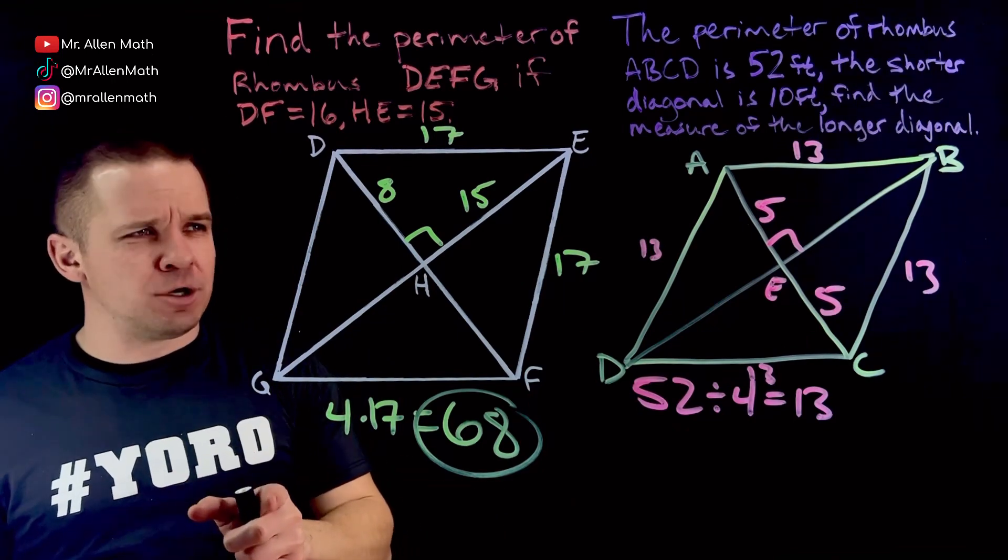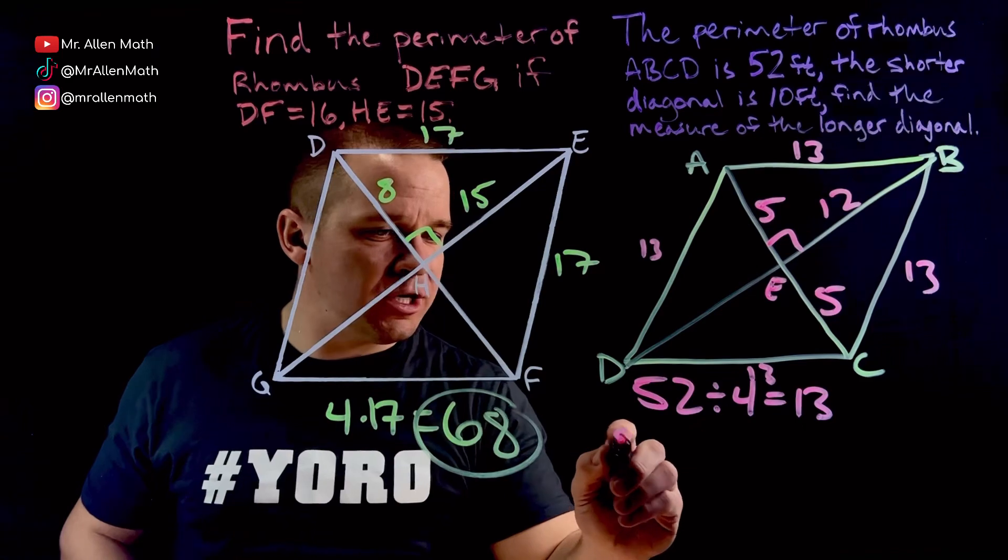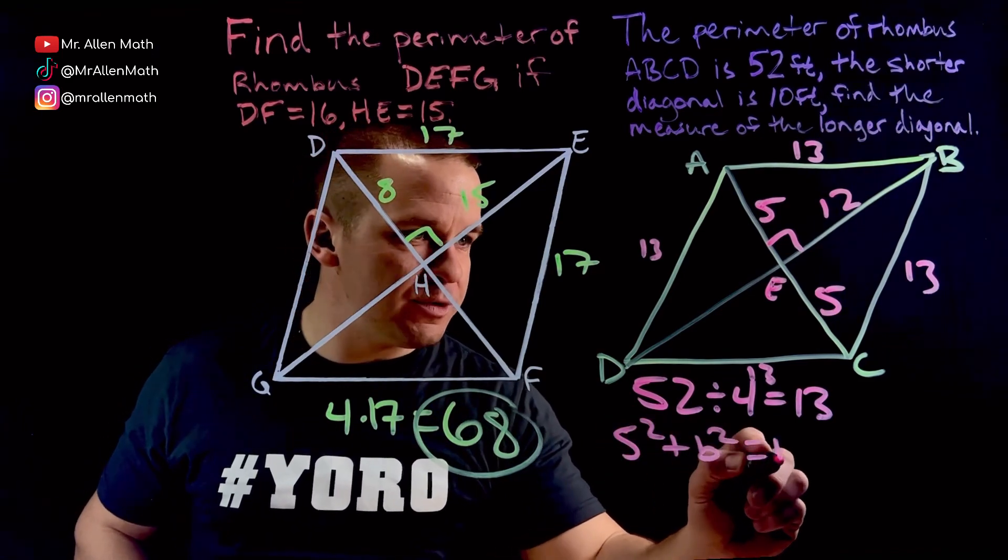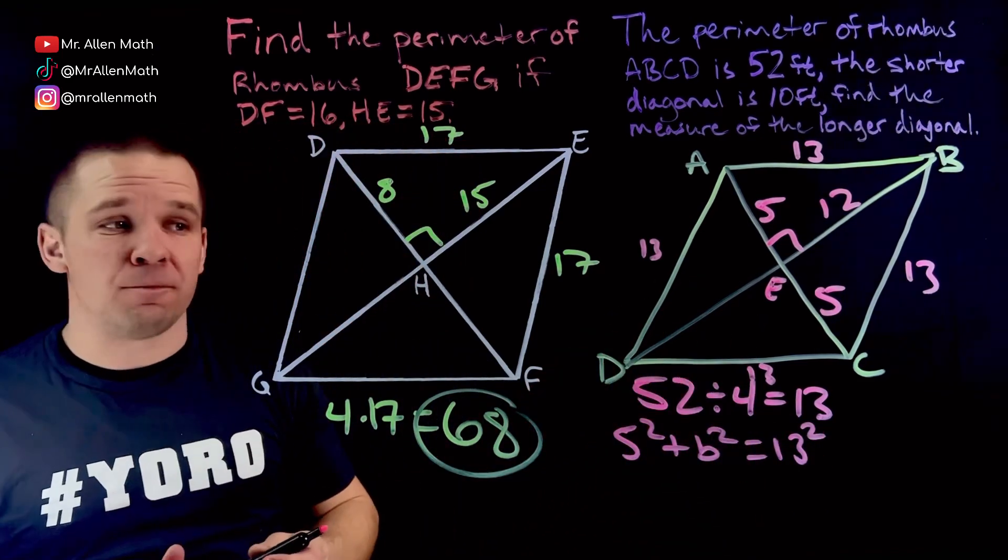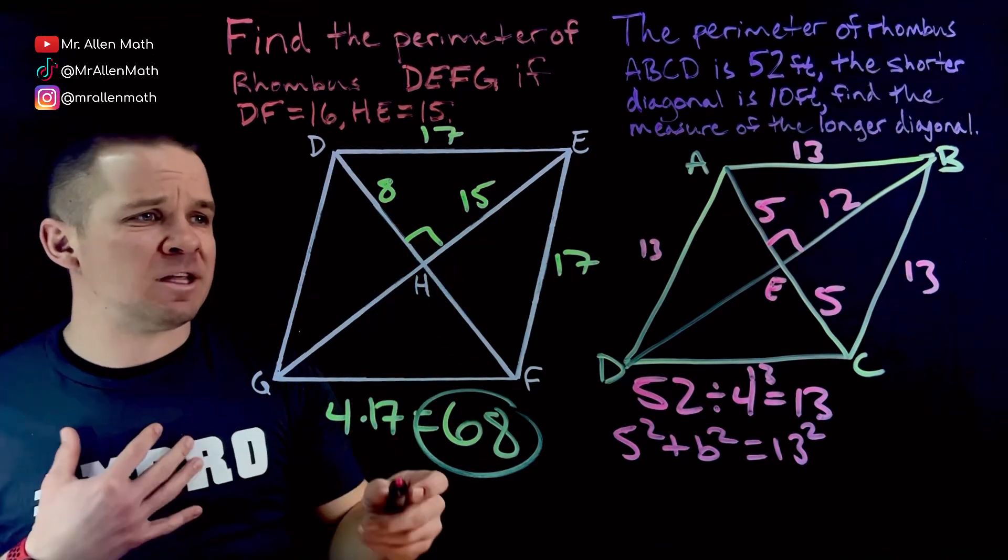Do you remember our Pythagorean triples? Five, 12, 13. And if you did not know that you could have done 5 squared plus B squared equals 13 squared and solve for B, right? But I love my Pythagorean triples. I remember them. Boom. That's 12.